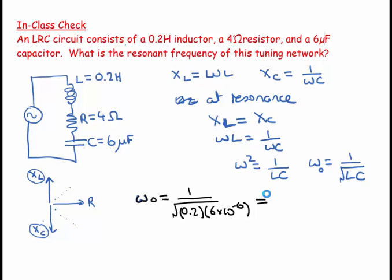Well, let's have a look. I'm going to get 0.2 times 6, E to the minus 6 equals that. And then I find the square root of that. And then I invert that. And according to my calculations, I've got 913.